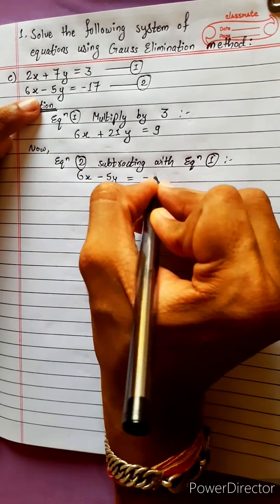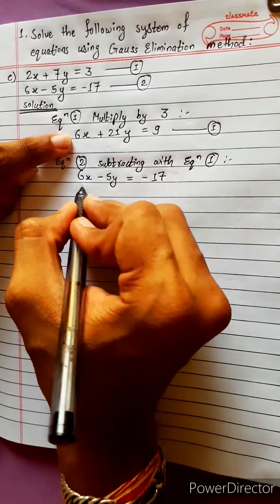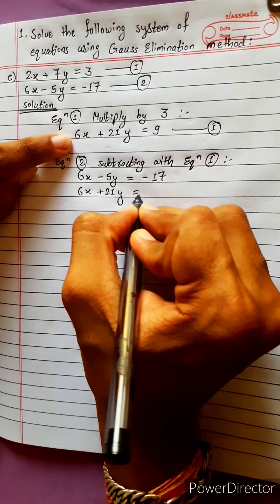Minus 5y equals minus 17, equation 1 here. 6x plus 21y equals 9.